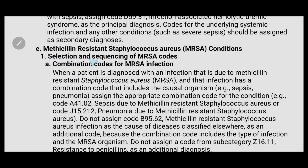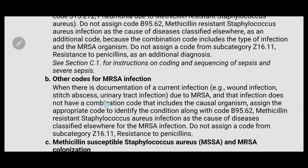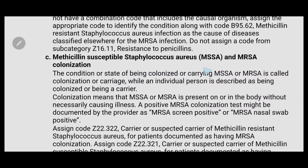Next is methicillin-resistant Staphylococcus aureus (MRSA) conditions. For combination codes for MRSA infection: when a patient is diagnosed with an infection due to MRSA and the infection has a combination code that includes the causal organism, assign the appropriate combination code. For other MRSA infections — for example wound infection, stitch abscess, or urinary tract infection due to MRSA — where the infection does not have a combination code, assign the appropriate code to identify the condition along with code B95.62 (MRSA infection as the cause of disease classified elsewhere).